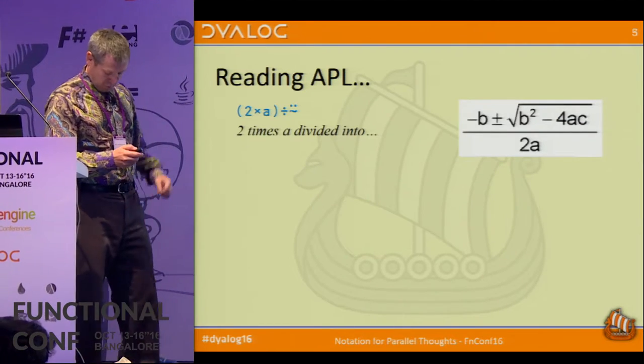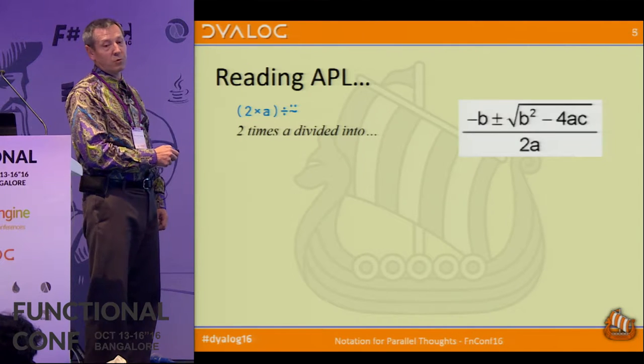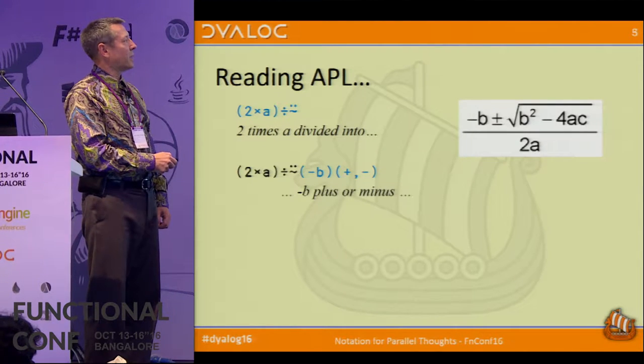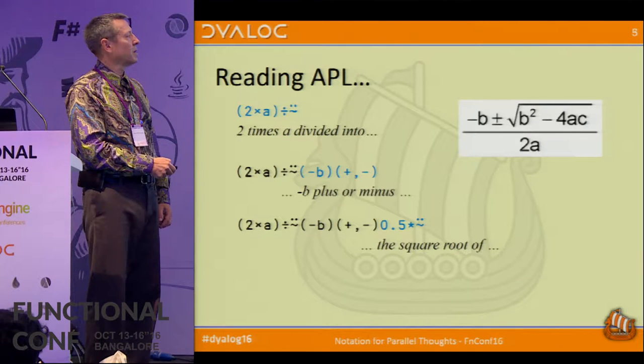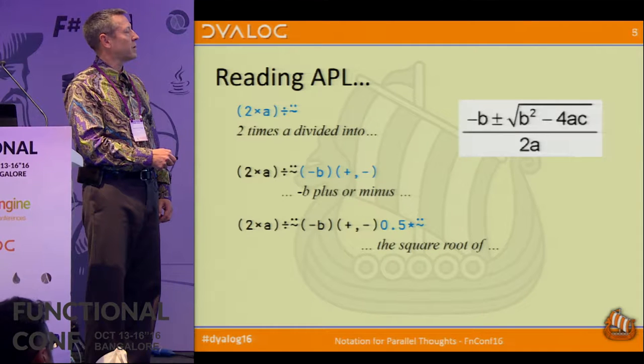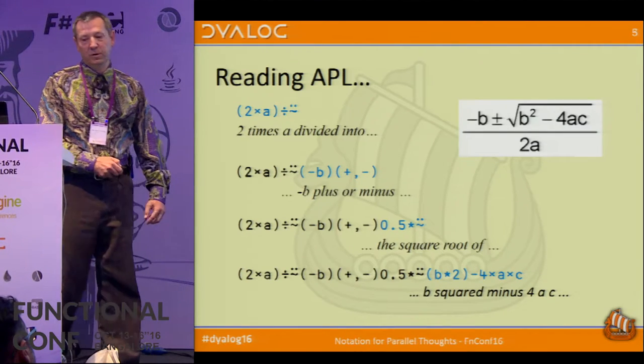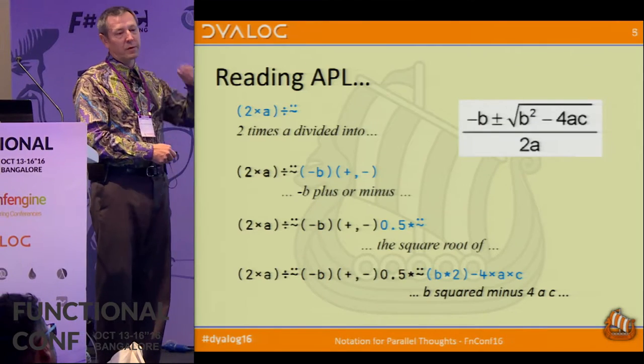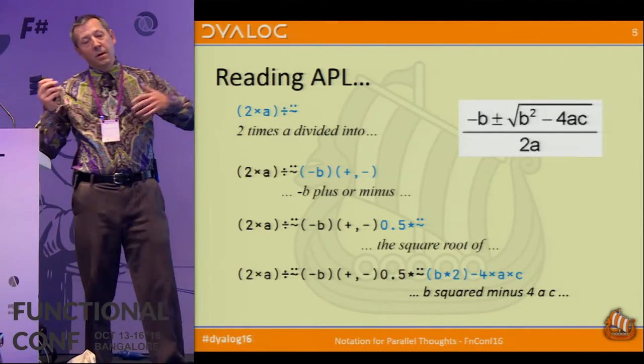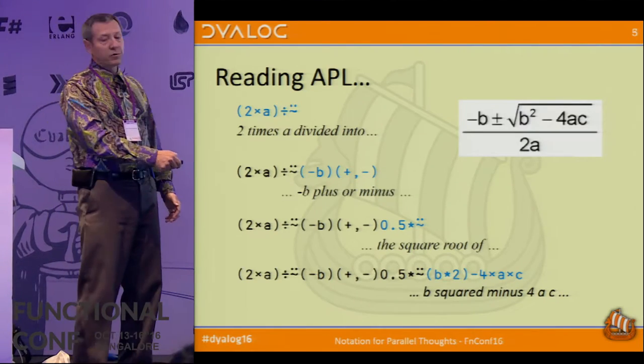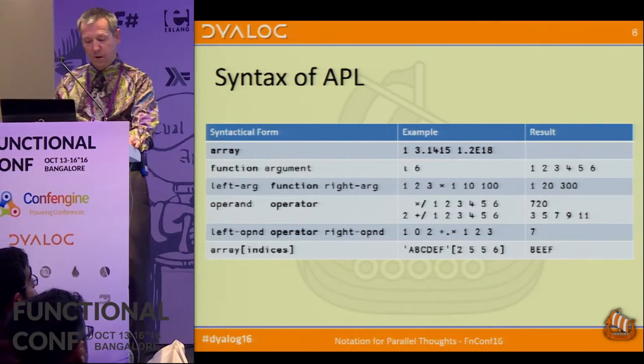So reading APL, I would write this as 2 times A, and here's commute, which Shashi showed us. So divided into minus B, plus or minus, plus catenate minus, the square root of, so 0.5 power commute, and then B squared minus 4 times A times C. And that's sort of the maximum length of an APL expression that I would recommend. If it gets much longer than that, you can't read it from left to right. So APL executes from right to left, but you should be able to read a good APL expression from left to right as it's being done here. If you can't do that, you should probably rephrase it so that it becomes easier to understand.